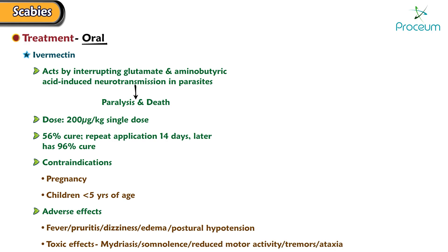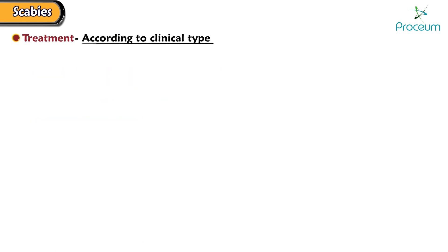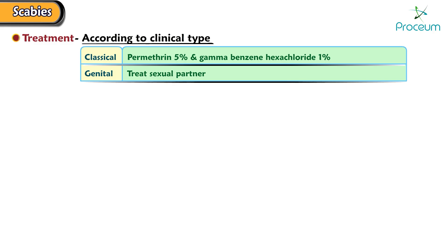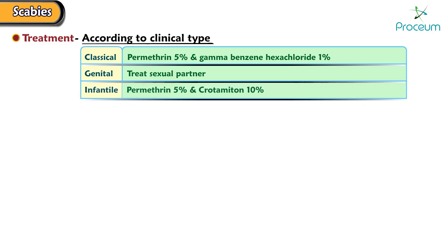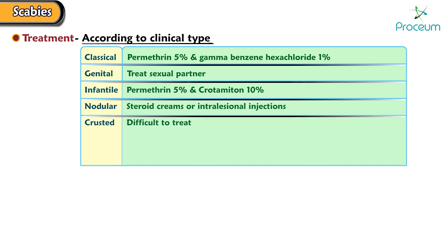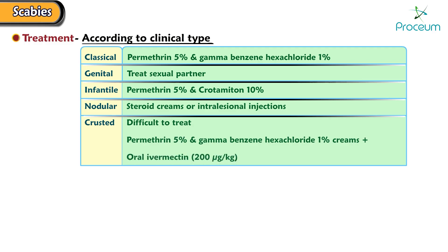Let's go over the preferred treatments according to clinical type. For classical scabies, use permethrin at 5% and gamma-benzene hexachloride at 1%. For genital scabies, treat the sexual partner. For infantile scabies, use permethrin at 5% and crotamiton at 10%. For nodular scabies, use steroid creams and intralesional injections. For crusted scabies, which is more difficult to treat, use permethrin at 5% and gamma-benzene hexachloride at 1% as creams with oral ivermectin at 200 micrograms per kilogram, repeated after one week. For animal-transmitted scabies, treat the dog.